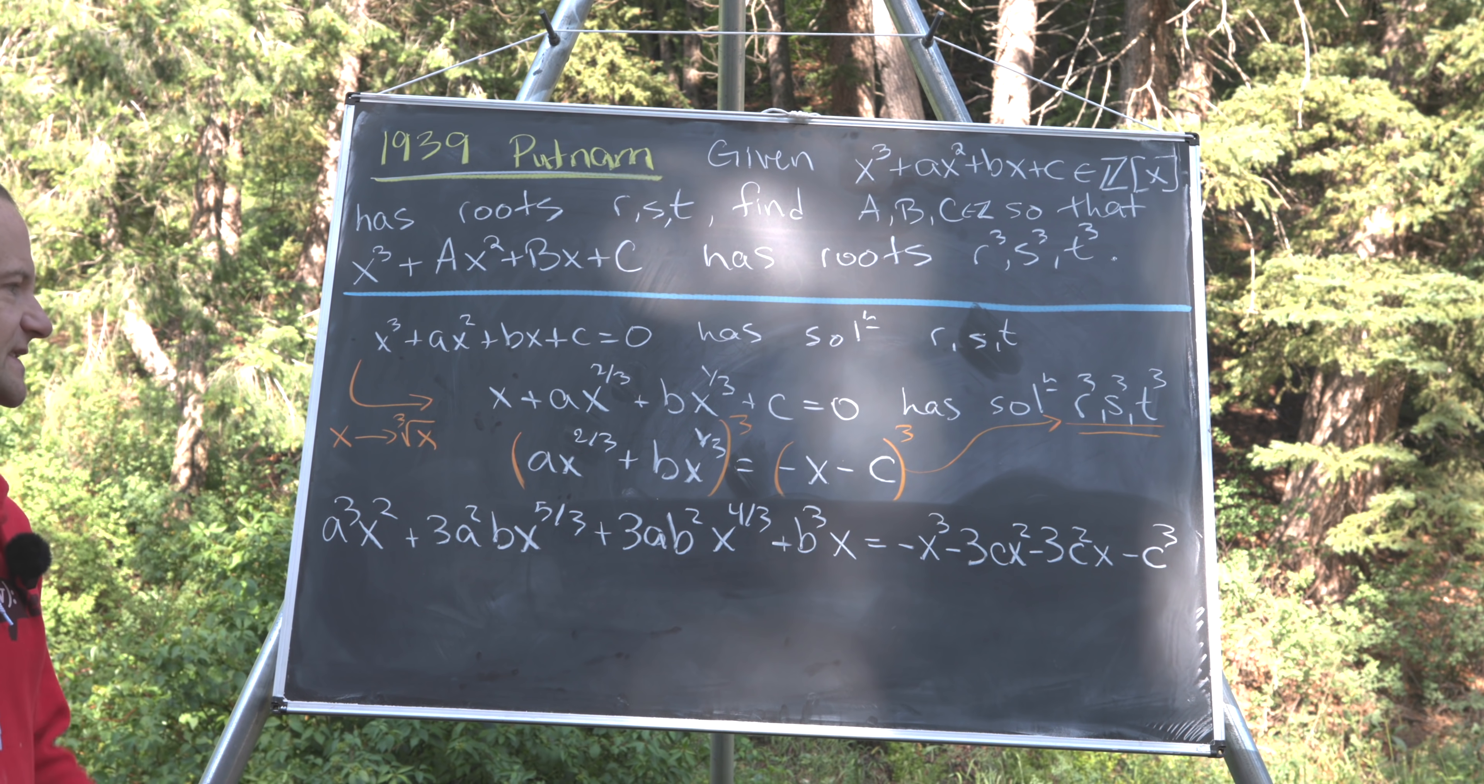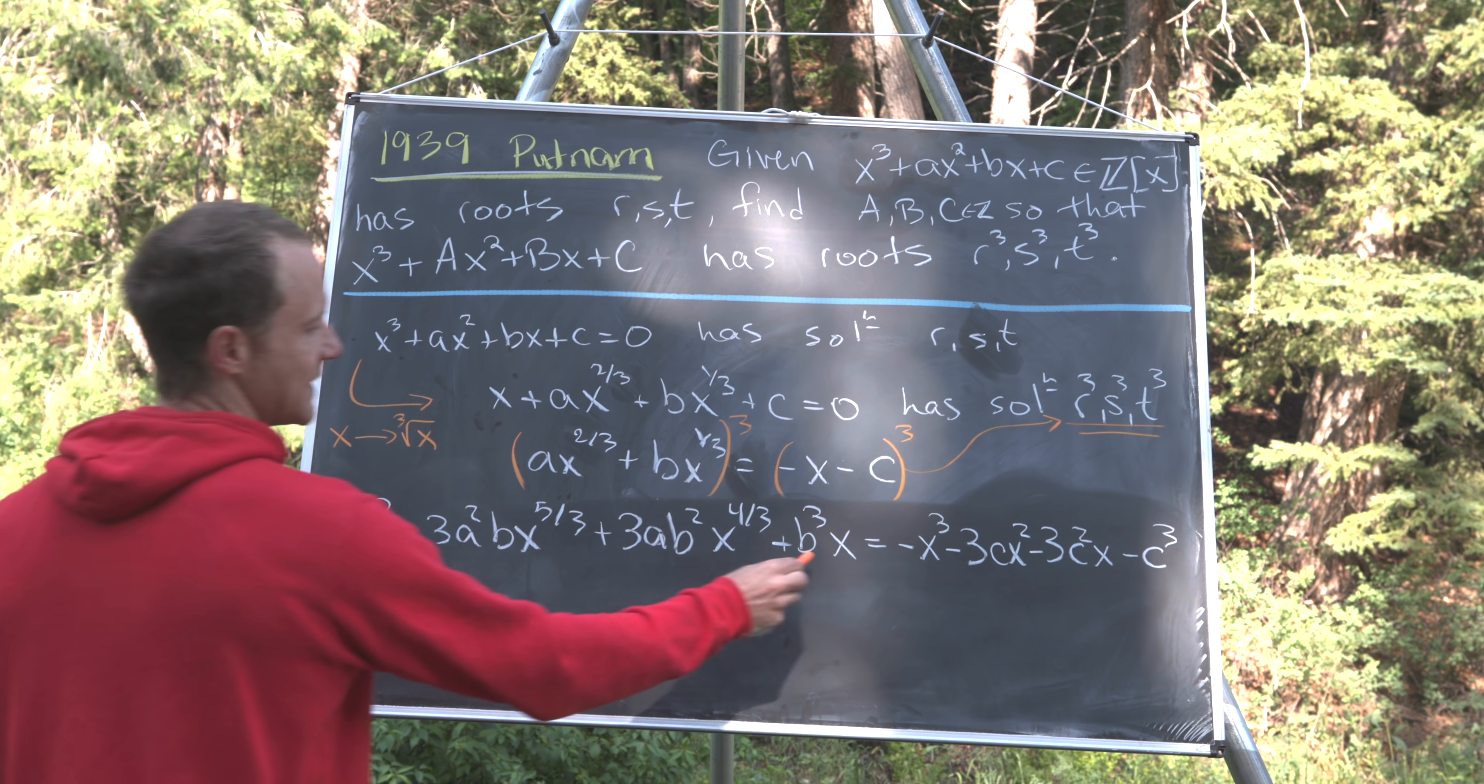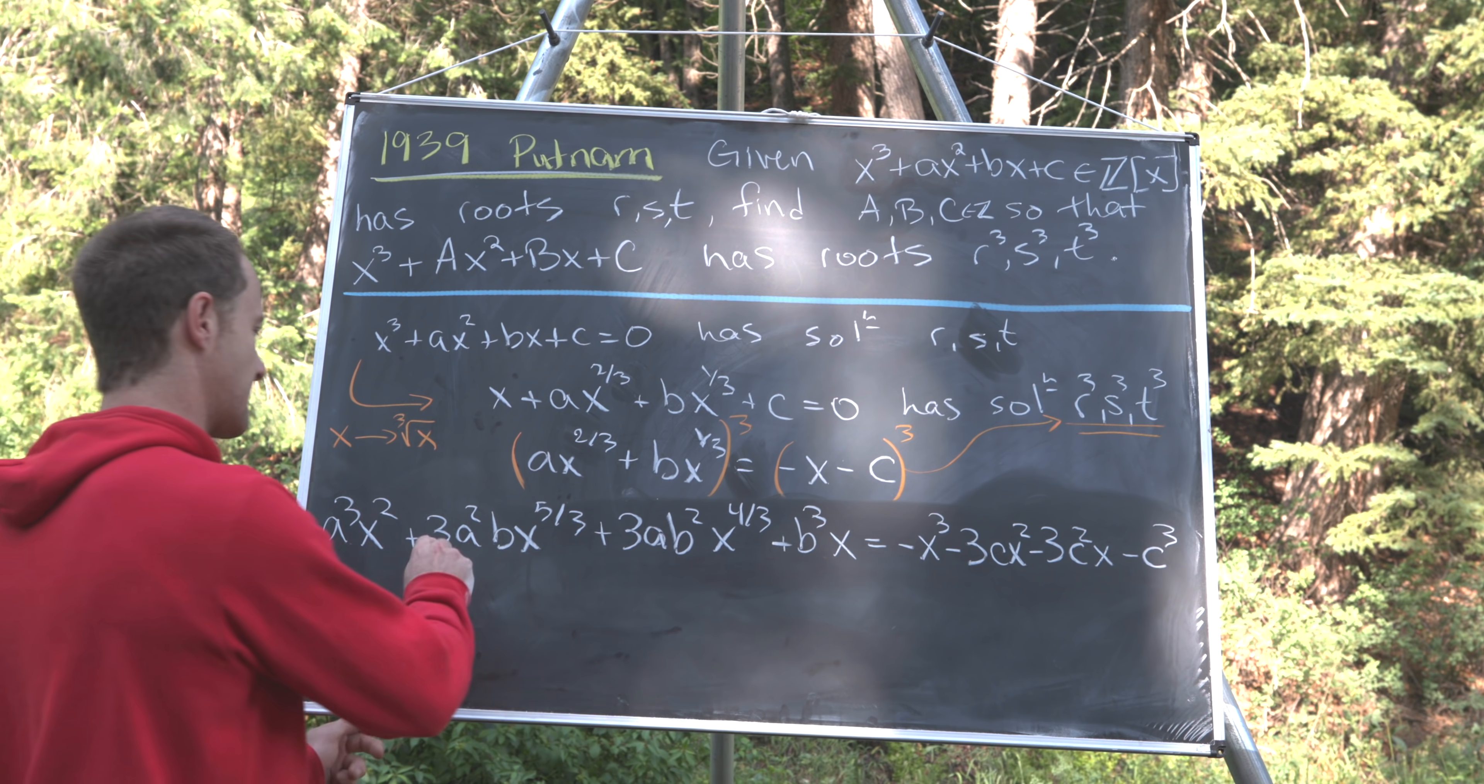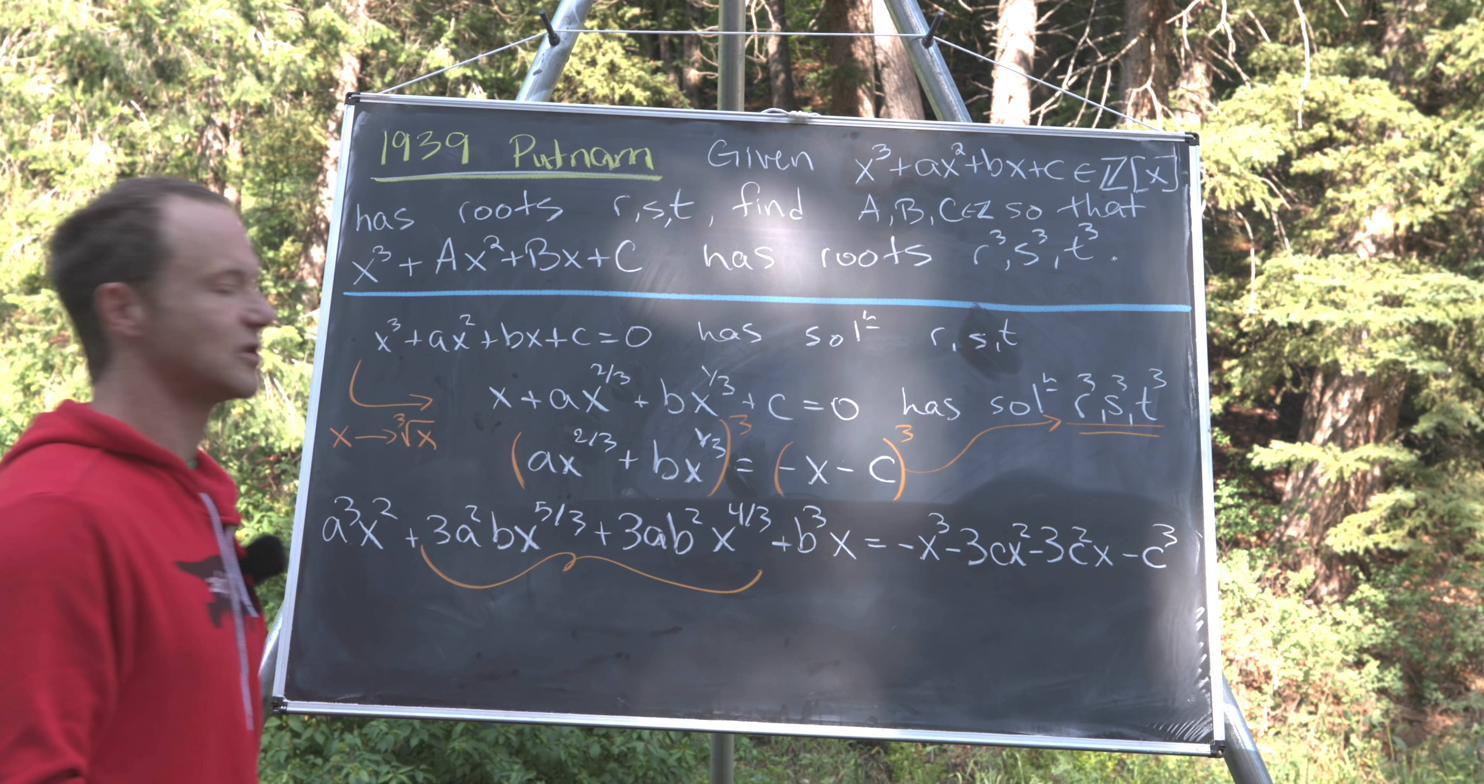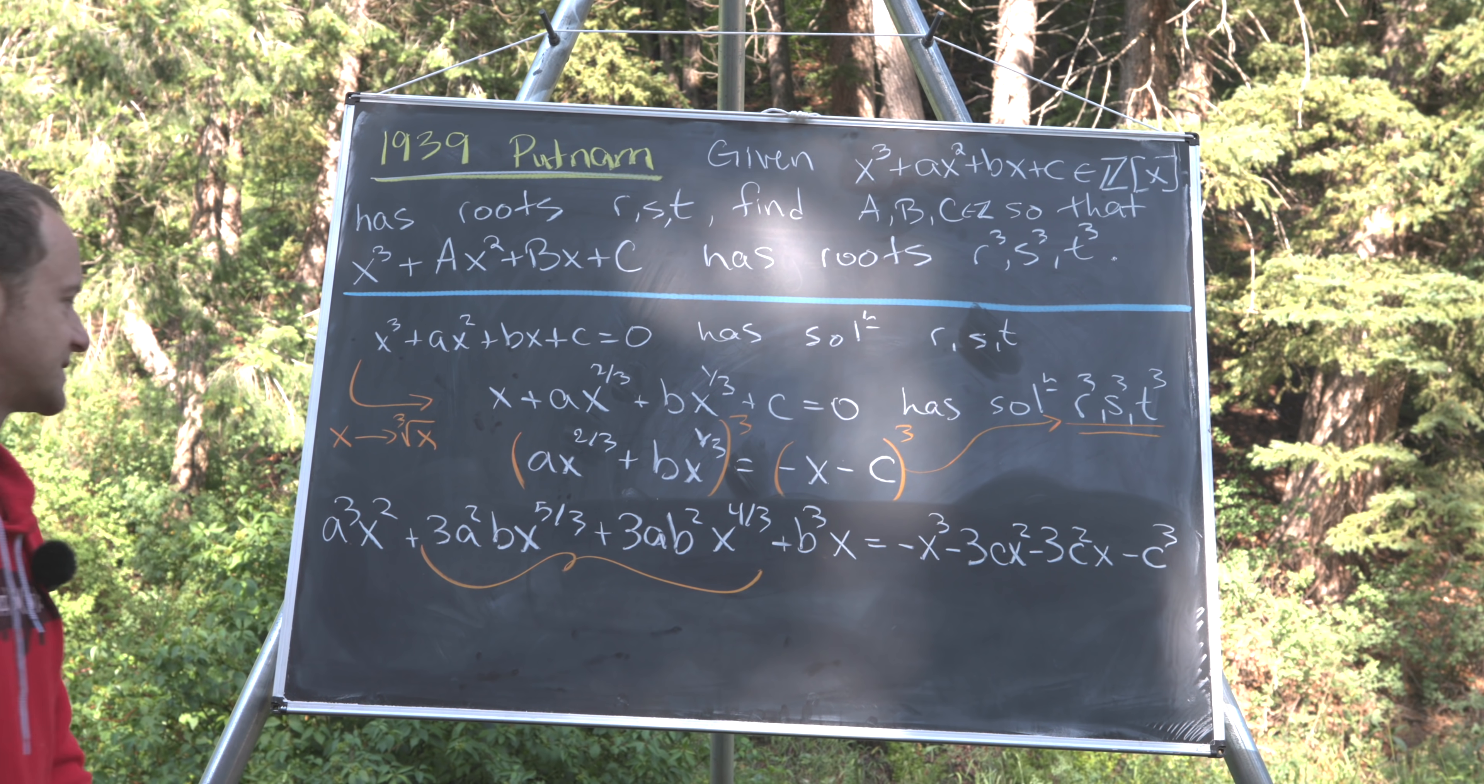Then we'll do the same minus x³ - 3cx² - 3c²x - c³. Okay, so it looks still problematic. We have polynomial terms here, here, and then all on the right-hand side. But these terms right here look like they still include rational exponents.